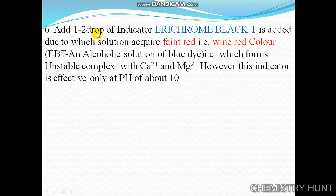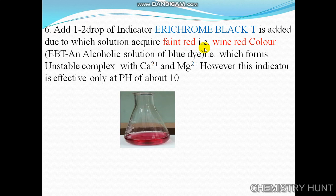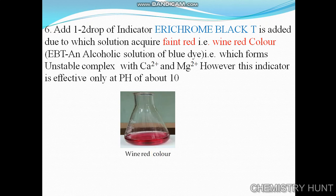After that, we add one to two drops of indicator — Eriochrome Black T (EBT) — which causes the solution to turn wine red in color. EBT is an alcoholic solution of a blue dye that forms an unstable complex with calcium and magnesium. When it forms this unstable complex with calcium and magnesium present in the water, the color changes to wine red. This indicator is effective only at pH 10.